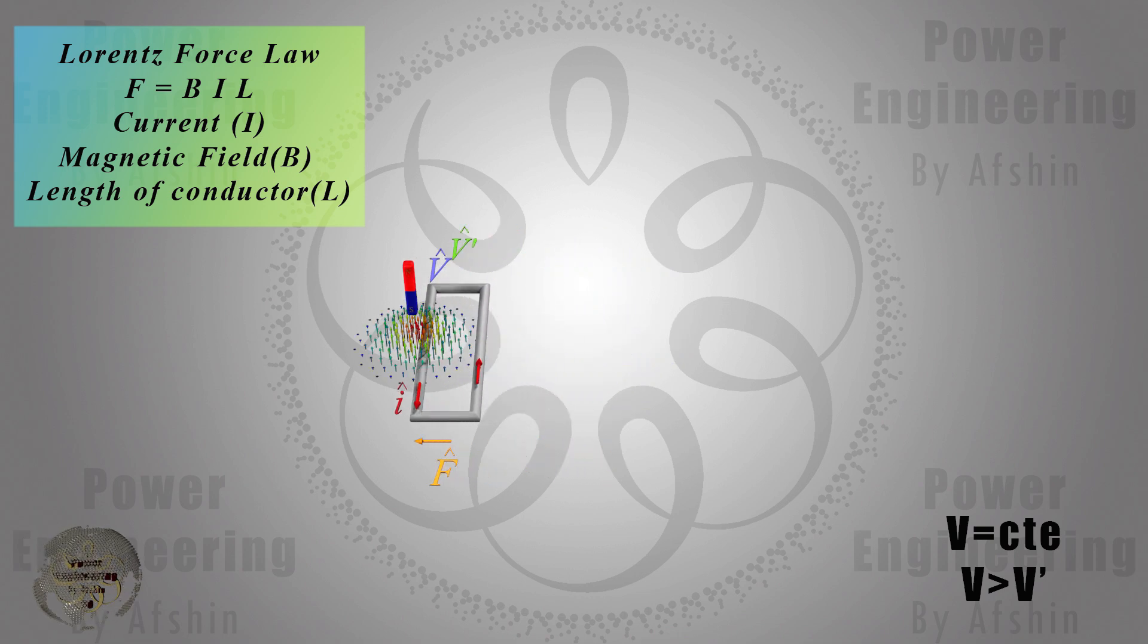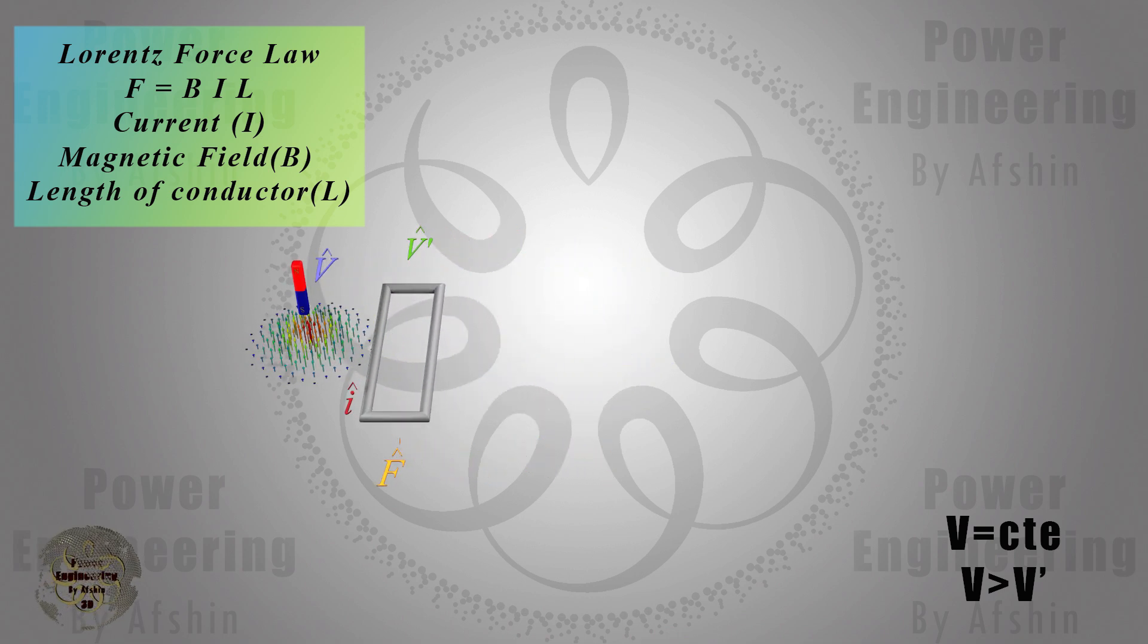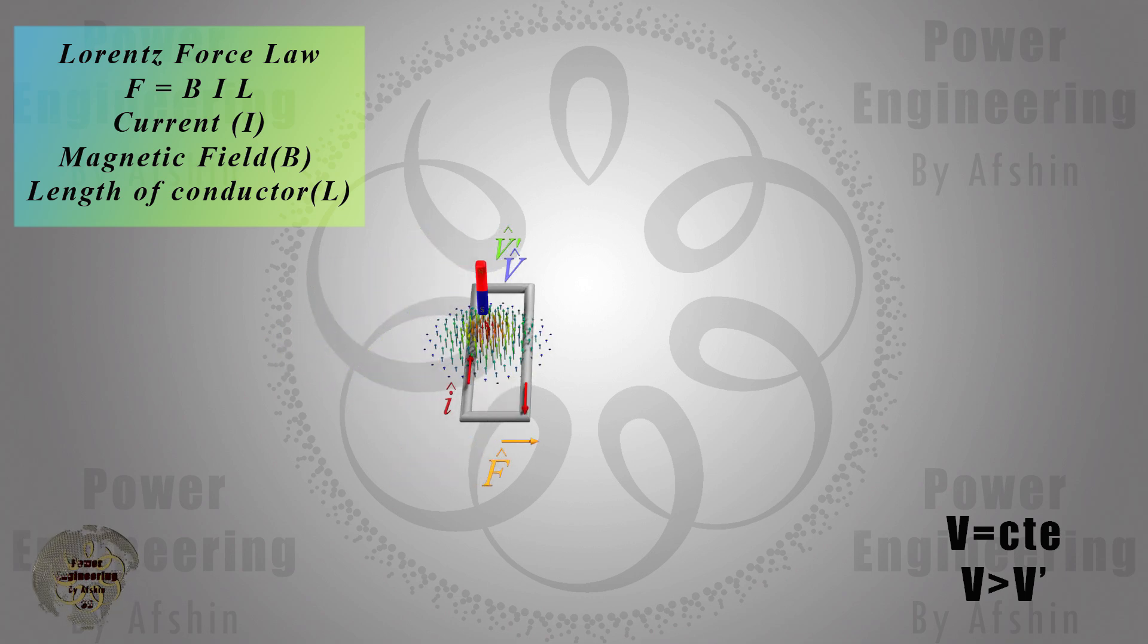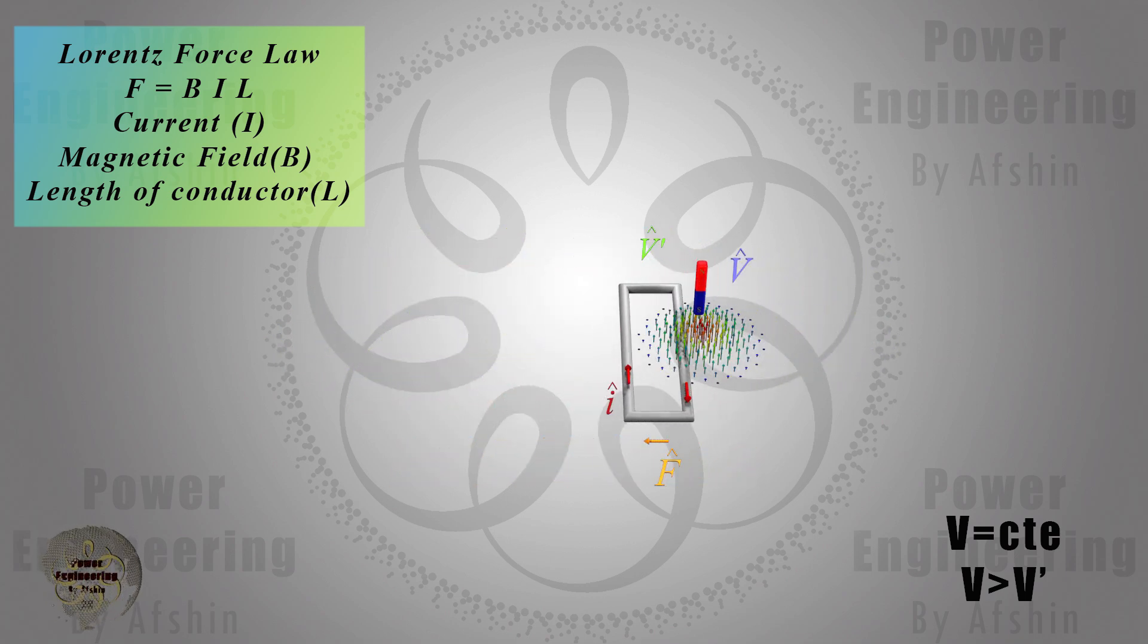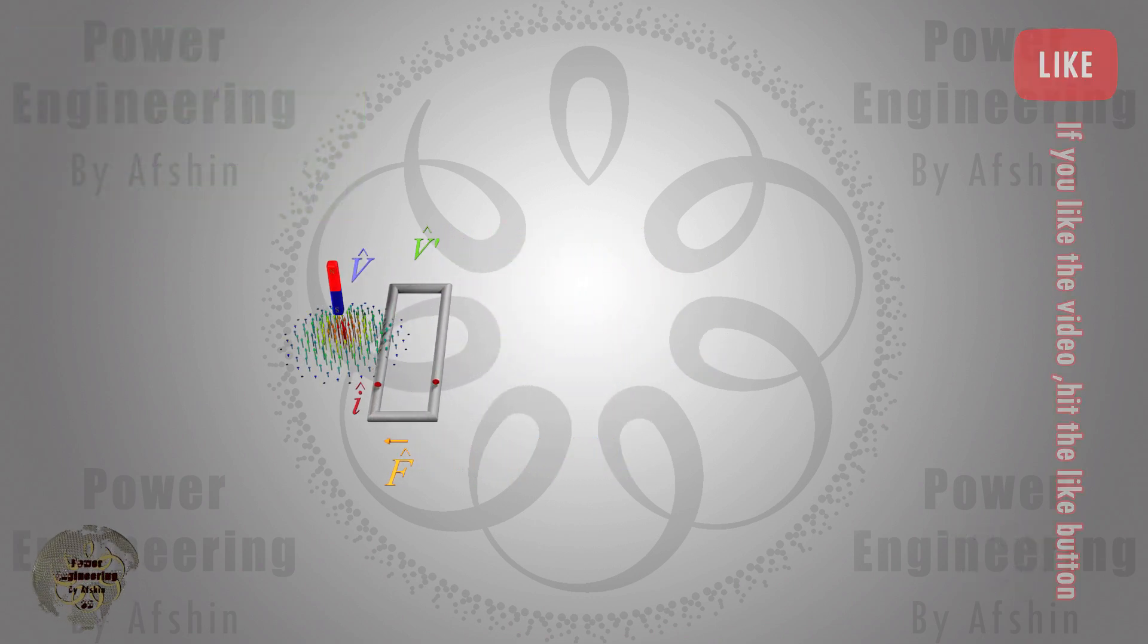This electromagnetic force acts in a direction either attracting the conductor towards the magnetic field or opposing it to nullify the induced voltage and current, thereby making the electromagnetic force zero.